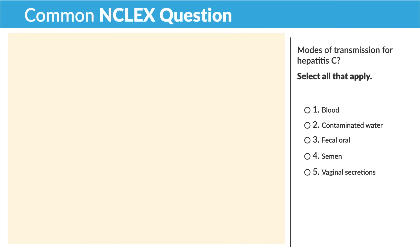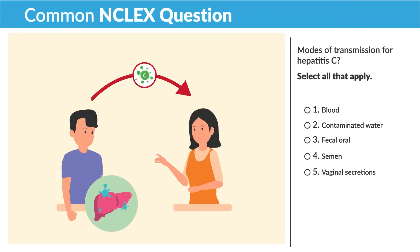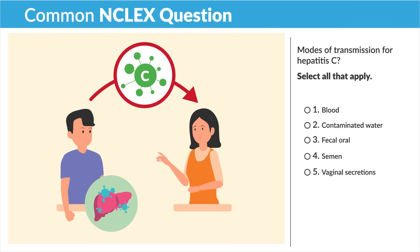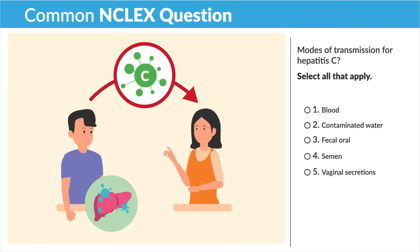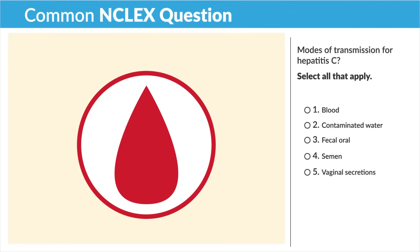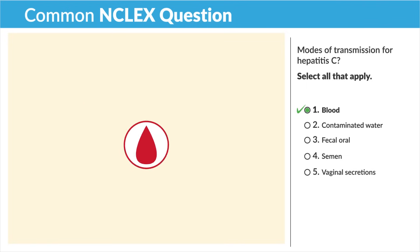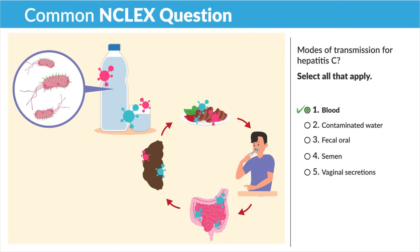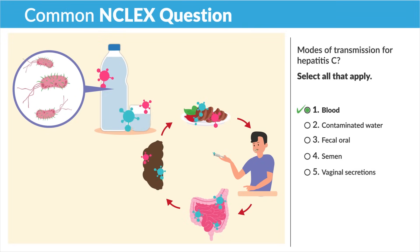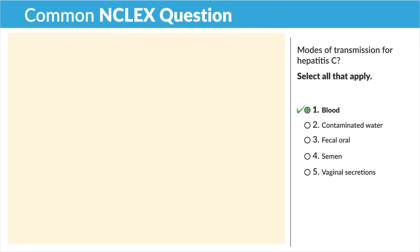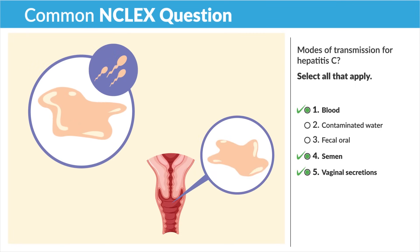A common NCLEX question asks about modes of transmission for hepatitis C — select all that apply. Remember, hepatitis B and C spread through blood and body fluids. Blood is correct. Options two and three are incorrect. Semen and vaginal secretions — options four and five — are correct for hepatitis C.